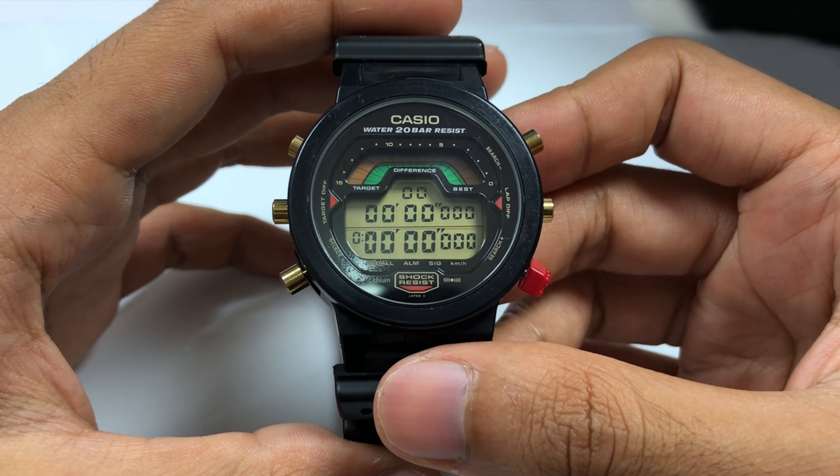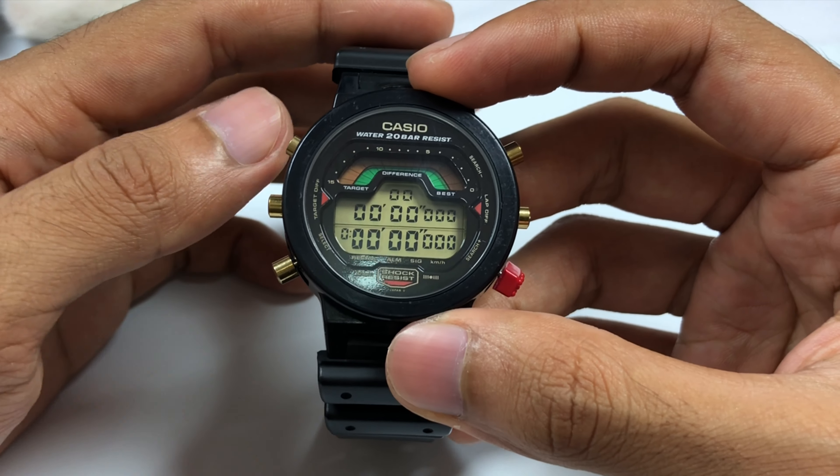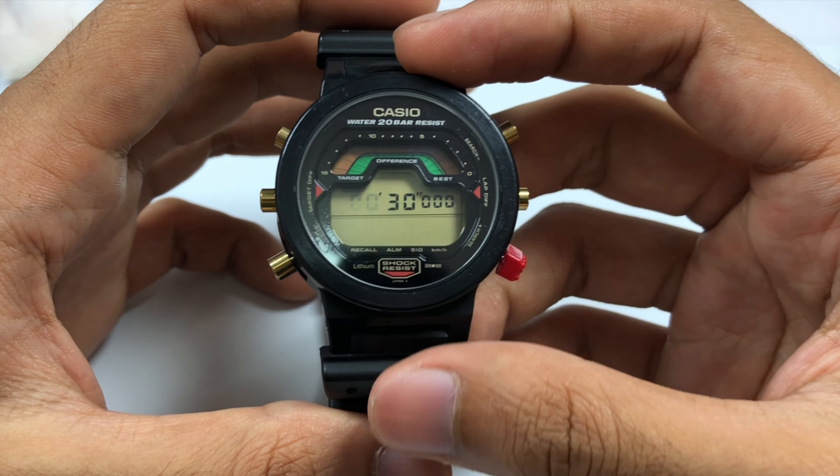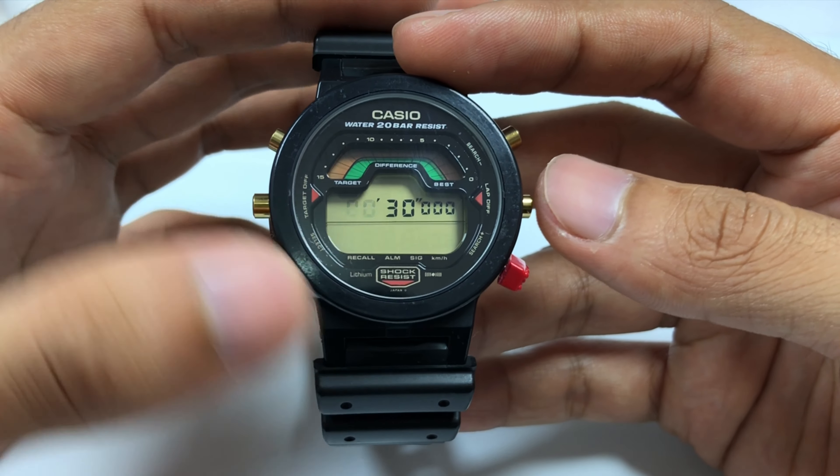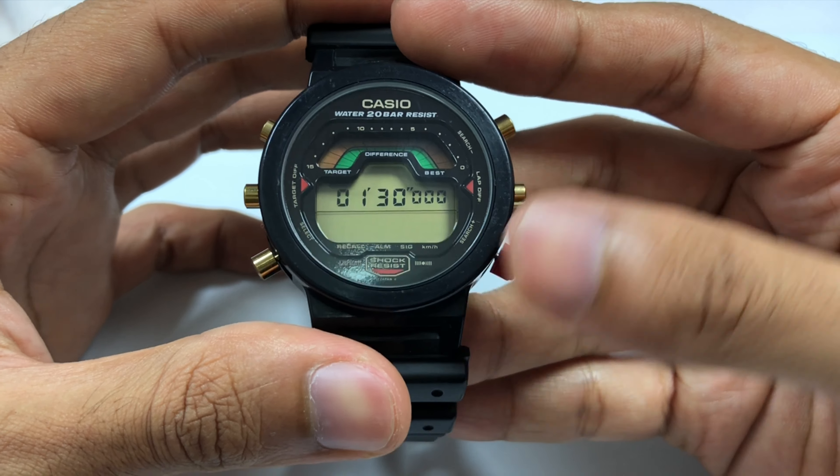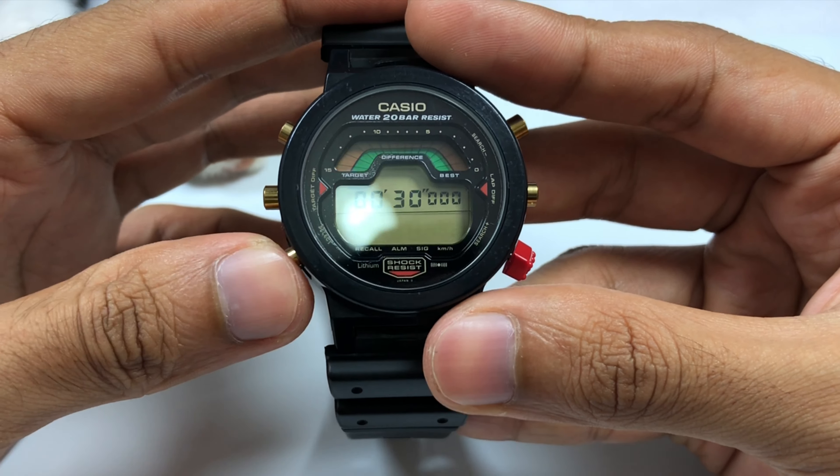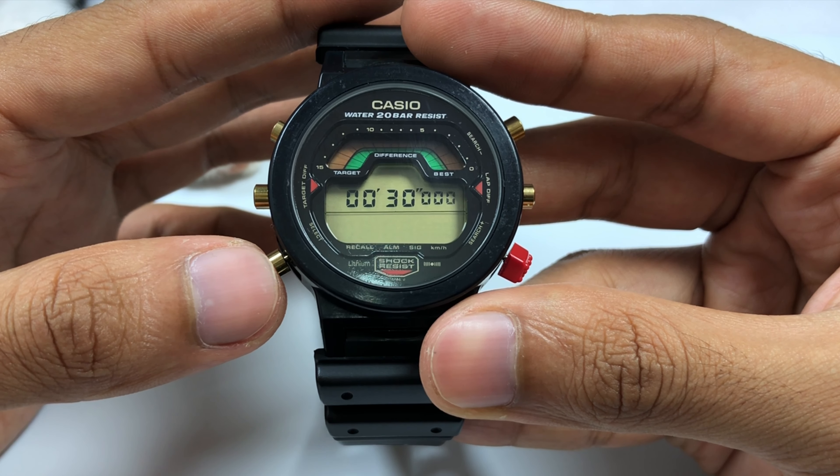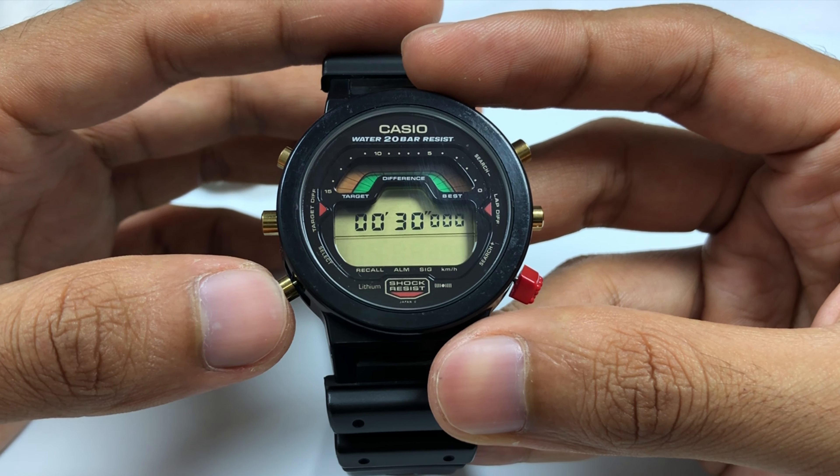Pressing the mode button once will enter the chronograph mode with target time function. To set the target time, press the adjust button on top. I already set it to the 30 second mark. You can set this using these two buttons at the center left and right to one minute or 59 minutes. I'm going to leave it at 30 seconds. You can set it to the very second, to one over thousand seconds precision, which is really impressive.